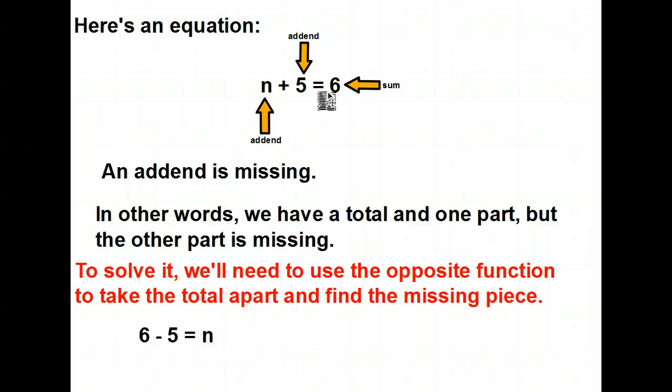I'm missing an addend. I know some number plus 5 will give me 6. The question, of course, is what is that number? Because I'm missing an addend. One addend is a variable, the other is 5. I get a sum of 6. I've got a total and one of the addends, but the other part's missing. So to solve that, I'm going to need to use the opposite function to take the total apart and find the missing piece. In other words, if I'm adding here, to find the solution, I need to do the opposite of adding, which would be subtraction. So here I'm going to take my sum and take out the addend. It should give me the other addend. 6 minus 5 is 1.